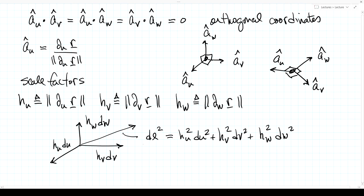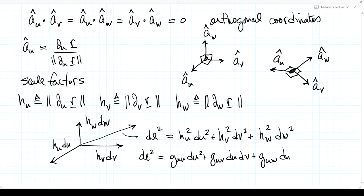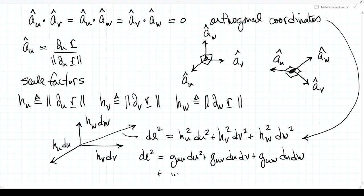This allows us to convert changes in coordinates to spatial displacements. Without orthogonality, dl² would have nine terms including cross terms like dU dV and dU dW, making the problem massively more complicated. With orthogonal coordinates, we get the nice Pythagorean form.